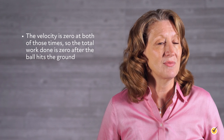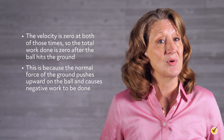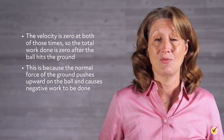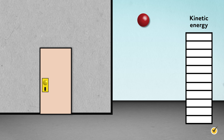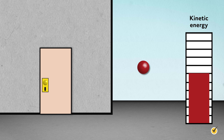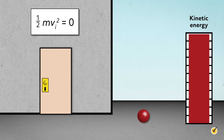So what is the total amount of work being done from when the ball is at rest to the time it hits the ground? The velocity is zero at both of those times, so the total work done is zero after the ball hits the ground. This is because the normal force of the ground pushes upward on the ball and causes negative work to be done, canceling out the work from gravity. However, if we look at the work done when the ball is only halfway to the ground, we will have a non-zero value of kinetic energy since the ball has a non-zero velocity. When we plug this into the work-energy theorem with the initial velocity squared equal to zero, we will get a non-zero value for work. So the value for work done will change depending on where the ball is on its way to the ground.